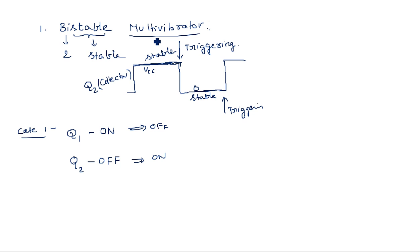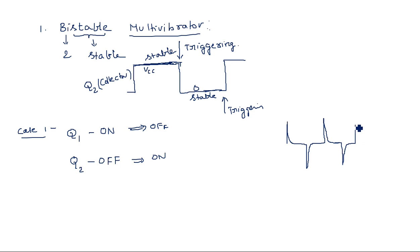A triggering pulse is a very short-duration signal, most commonly generated from a high-pass RC differentiator circuit, where RC is much less than the input signal time period. The differentiator produces spikes — this small time interval is sufficient to change the state of the transistor.